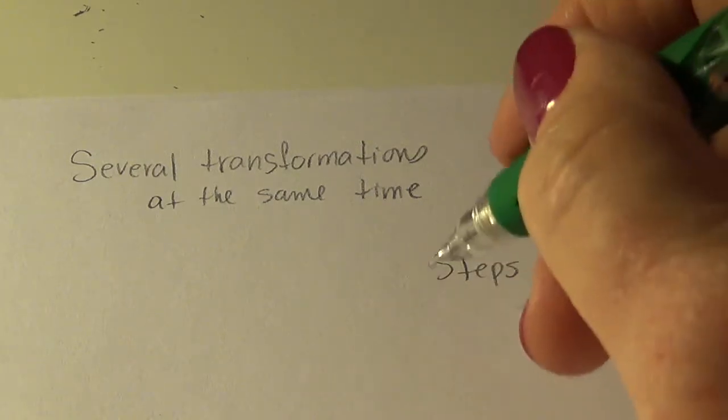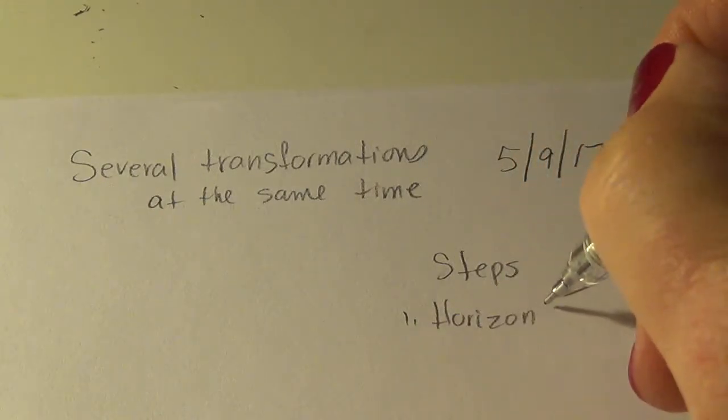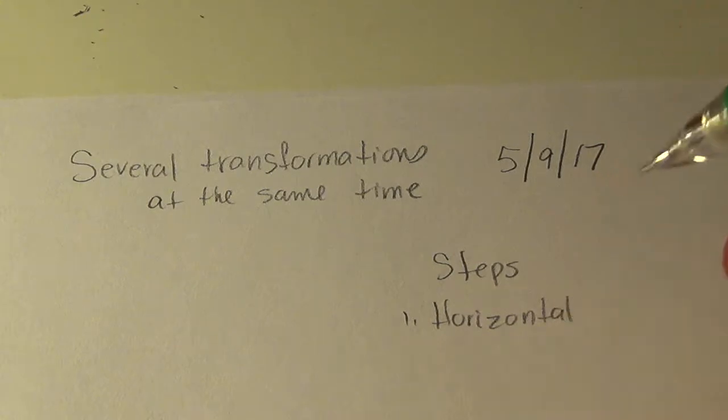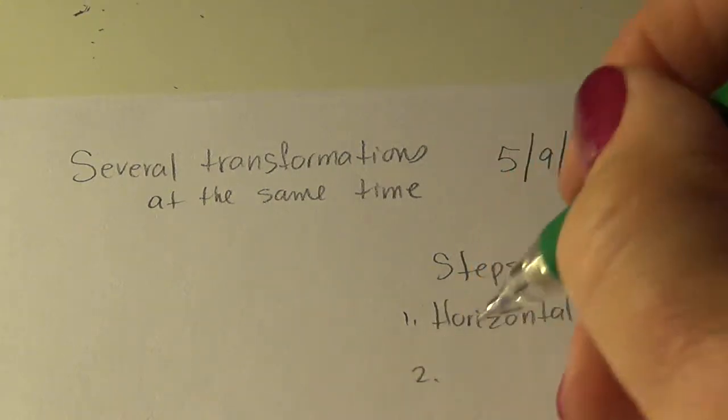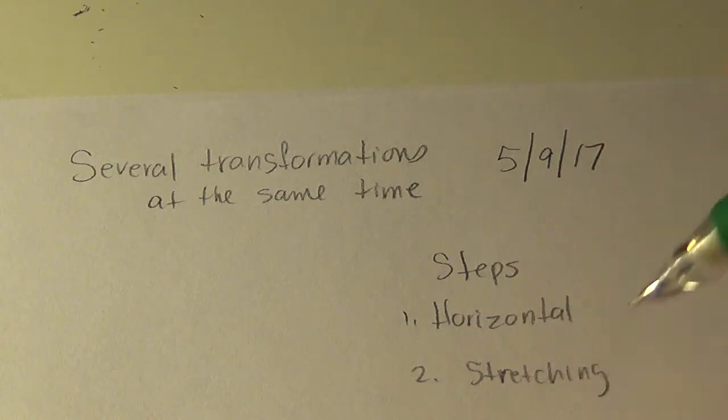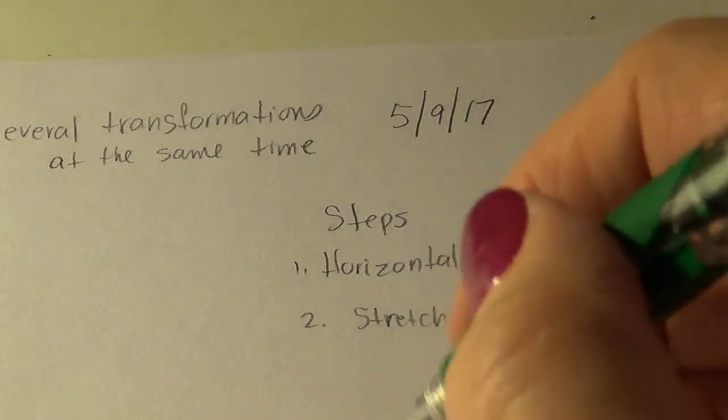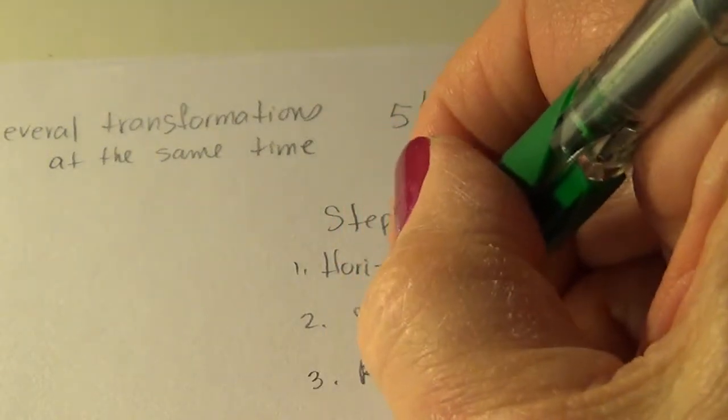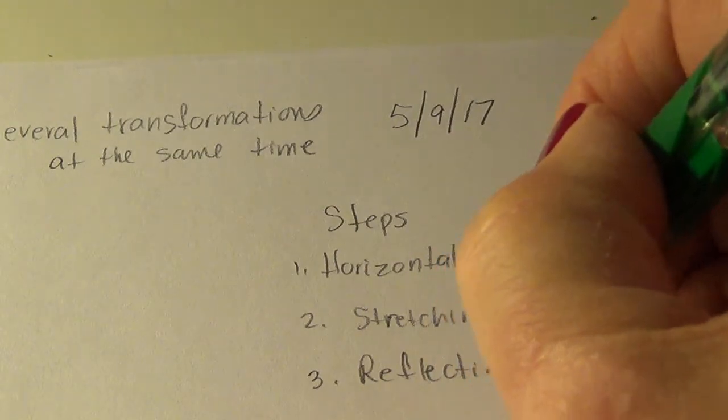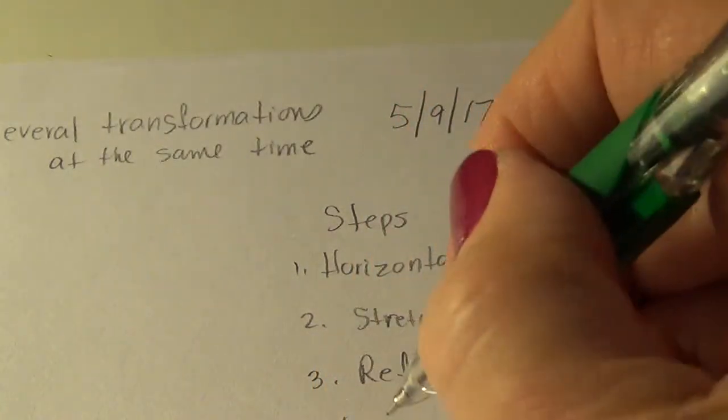The first thing you're going to do is horizontal transformations. Then you're going to do the stretching or shrinking. Then you are going to do reflections. And then lastly, the vertical transformations.